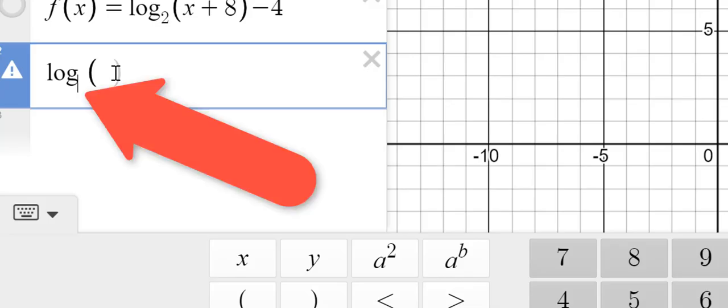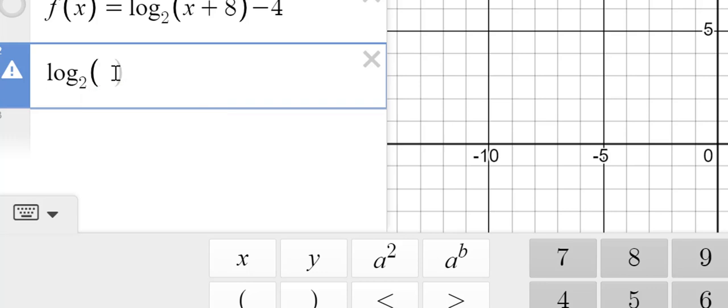Now notice where the cursor is, that's blinking right now, so that's where we're gonna put the two, cause that's our base. Then we'll use our arrow keys, and move to the right to type in x minus eight. Now Desmos is kind of funny. Make sure you use lowercase x. So if you use a capital X, watch what happens.